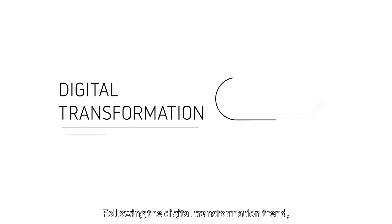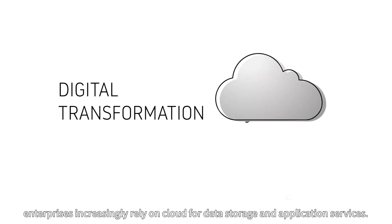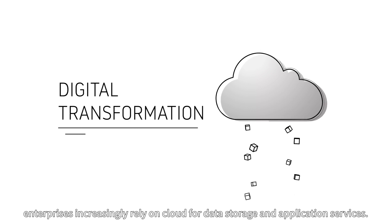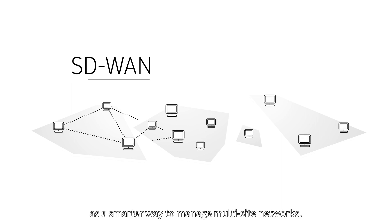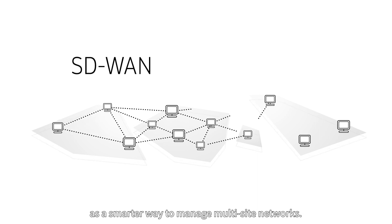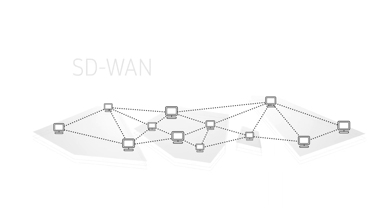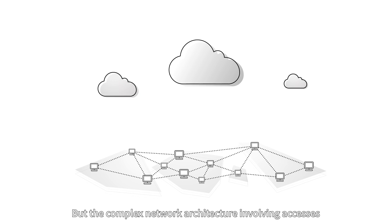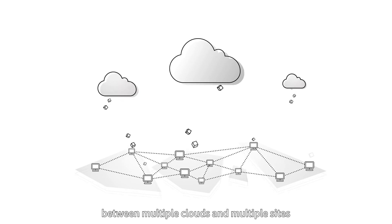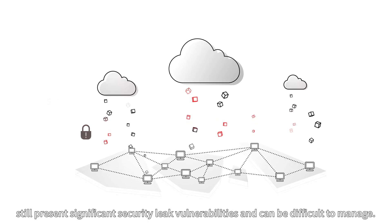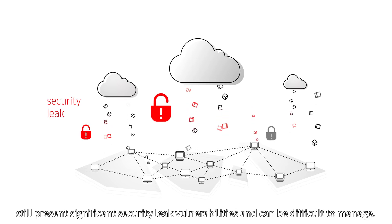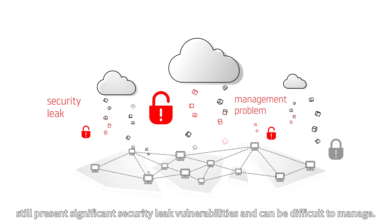Following the digital transformation trend, enterprises increasingly rely on cloud for data storage and application services. You may have already heard of using SD-WAN technology as a smarter way to manage multi-site networks. But the complex network architecture involving accesses between multiple clouds and multiple sites still presents significant security vulnerabilities and can be difficult to manage.